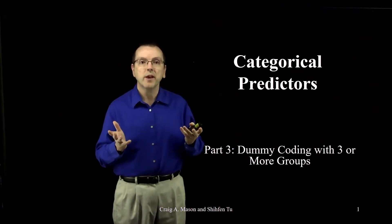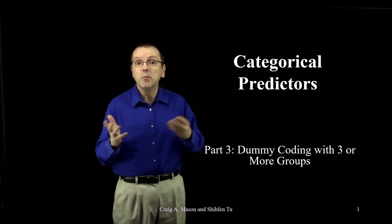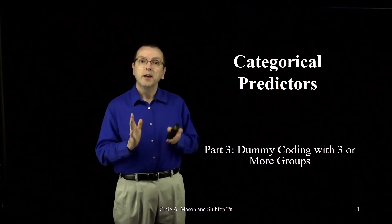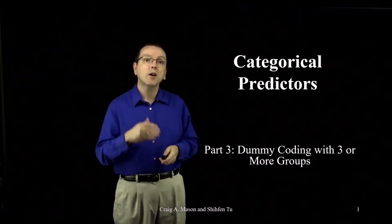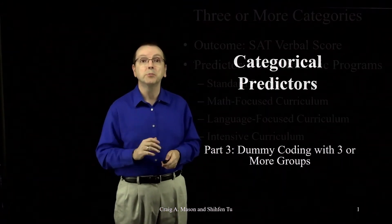Something like race or ethnicity that may be three or four or five or more groups? In this video we'll start our discussion on how to use dummy coding when we have more than two groups.